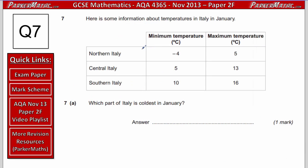Question 7. Here is some information about temperatures in Italy in January. Part A asks which part of Italy is the coldest in January. Looking at the minimum temperatures: Northern Italy is minus 4, Central Italy is 5, and Southern Italy is 10. The coldest temperature is minus 4, and the maximum temperature is also lowest in Northern Italy. So the answer is Northern Italy.